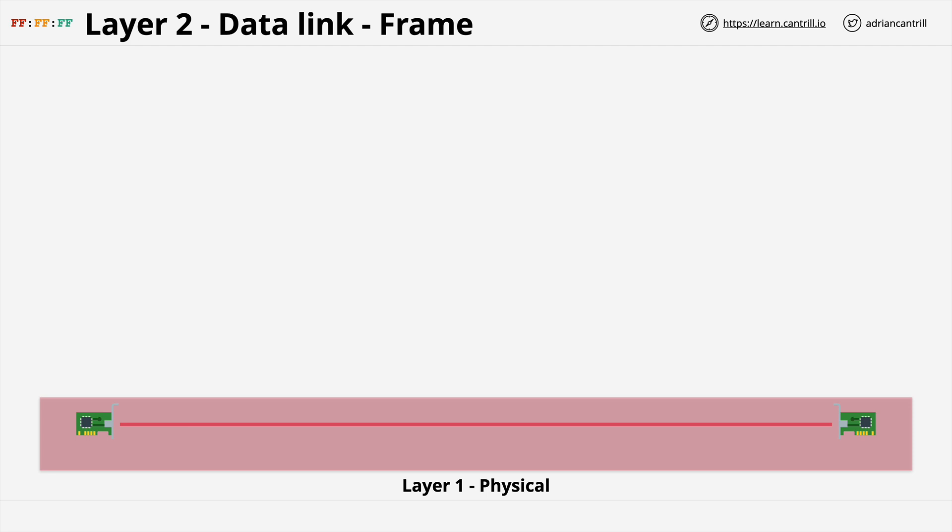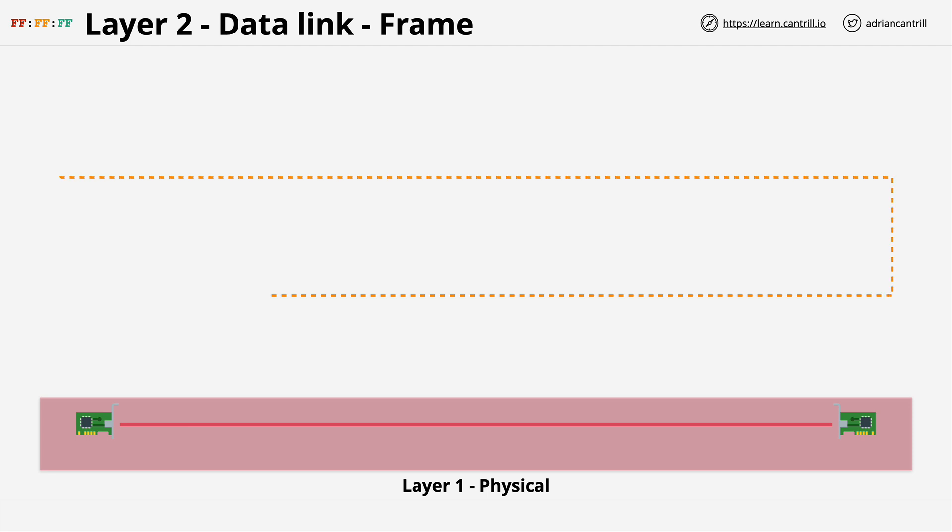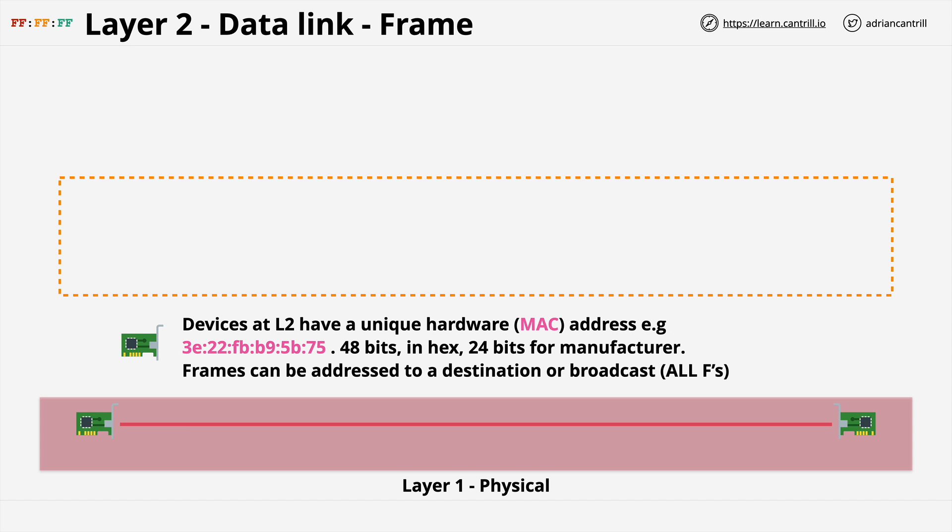Layer 2, rather than being focused on physical wavelengths or voltages, introduces the concept of frames. Frames are a format for sending information over a layer 2 network. Layer 2 also introduces a unique hardware address called a MAC address for every device on a network. This hardware address is a hexadecimal address, it's 48 bits long, and it looks like this.